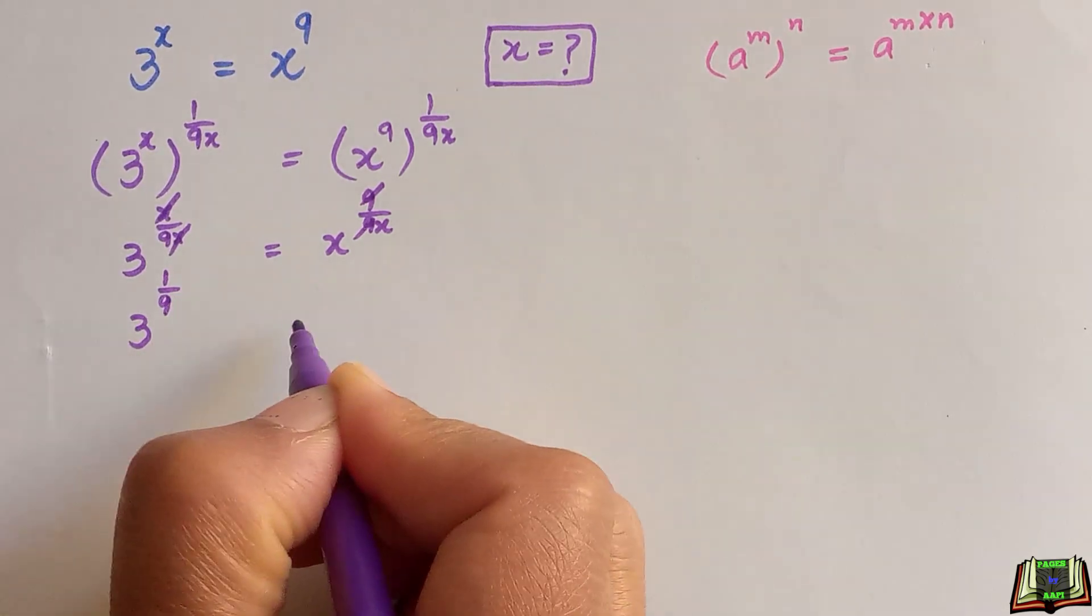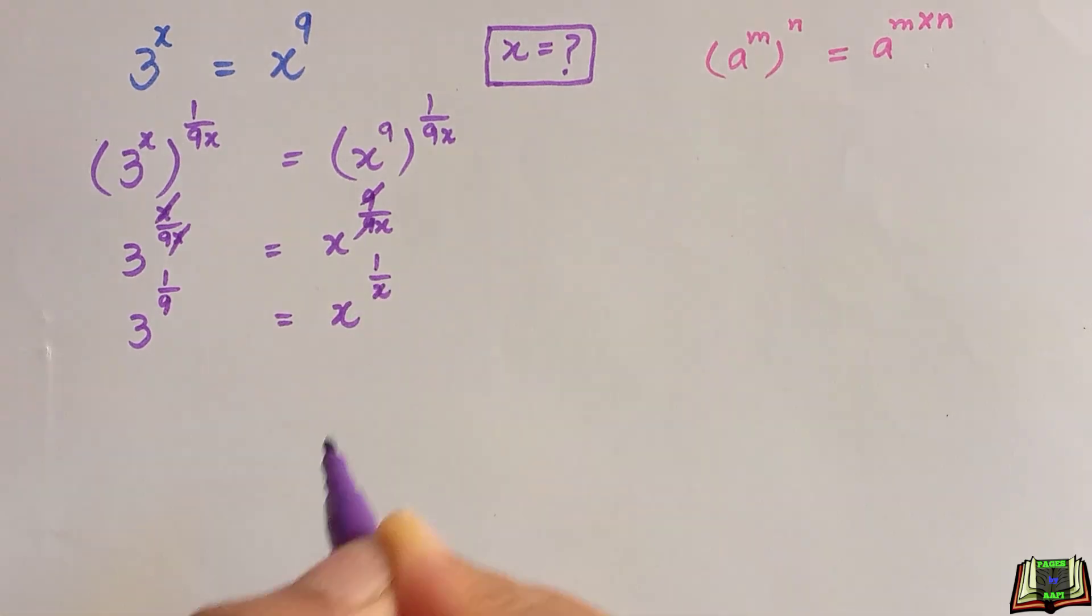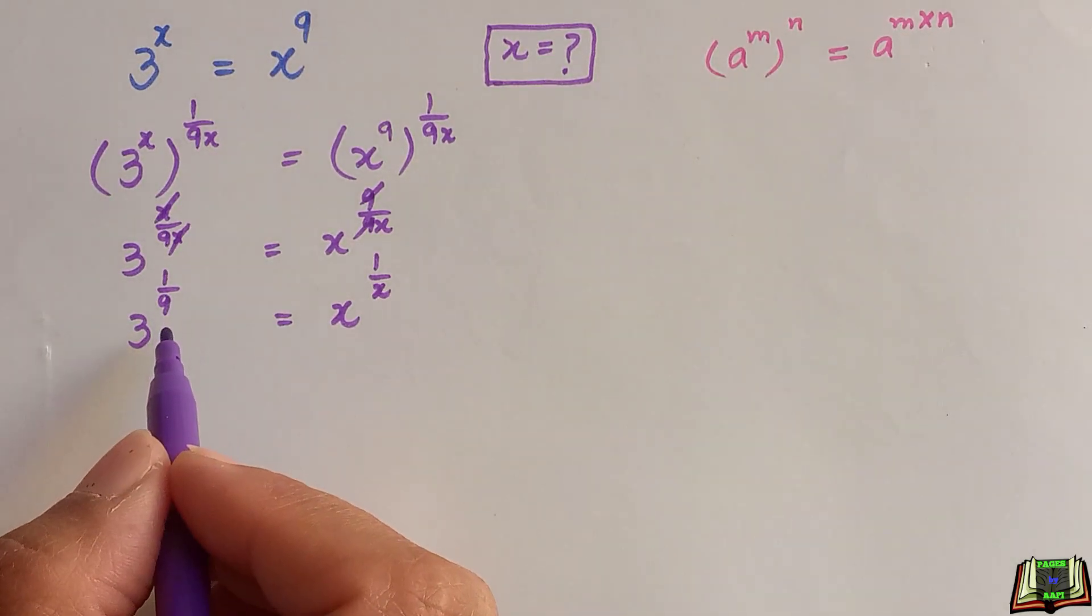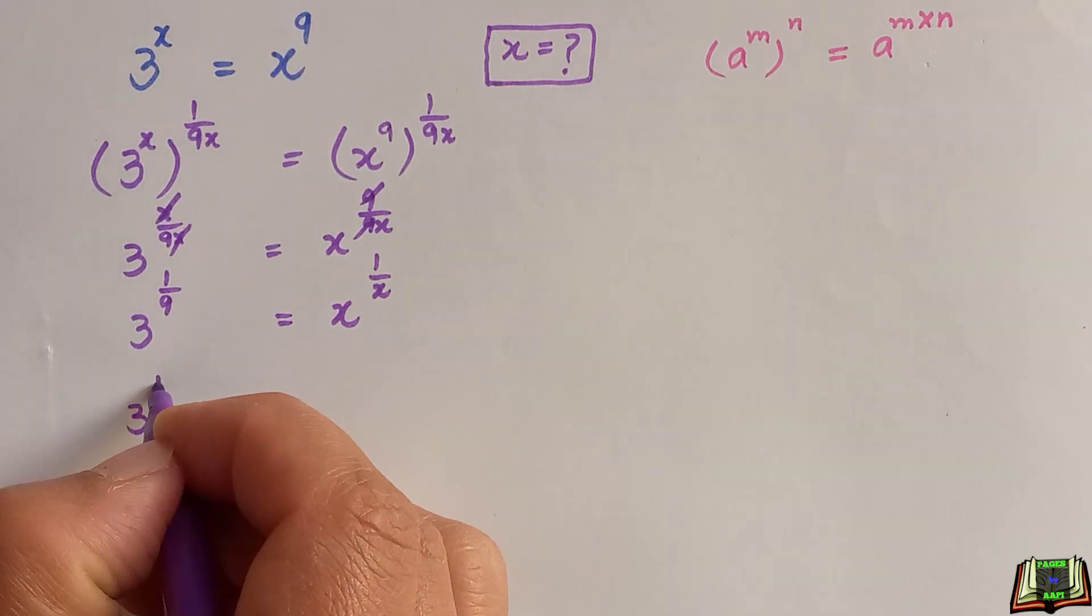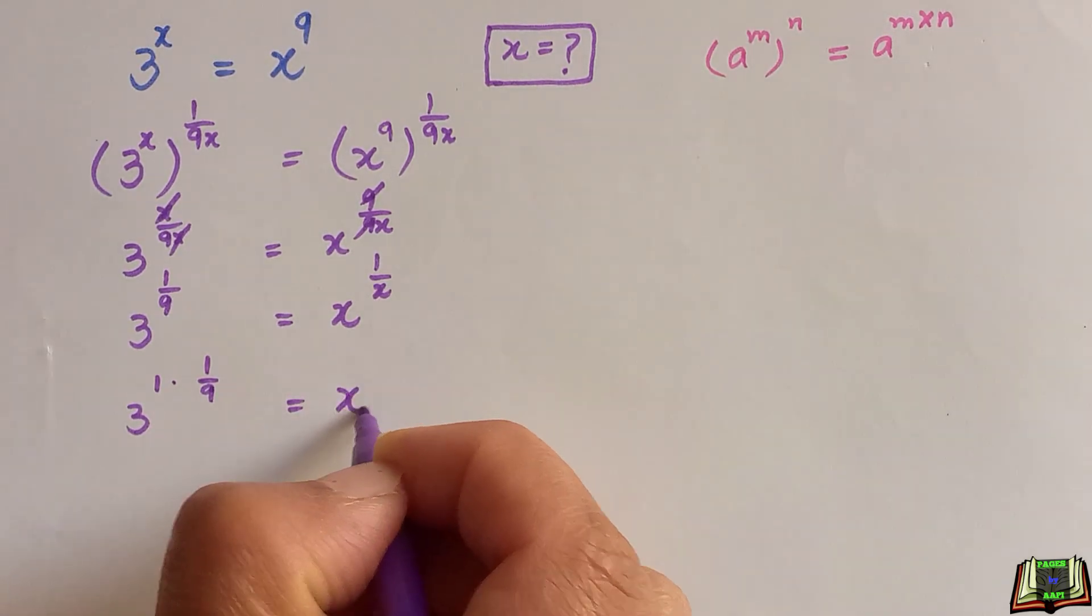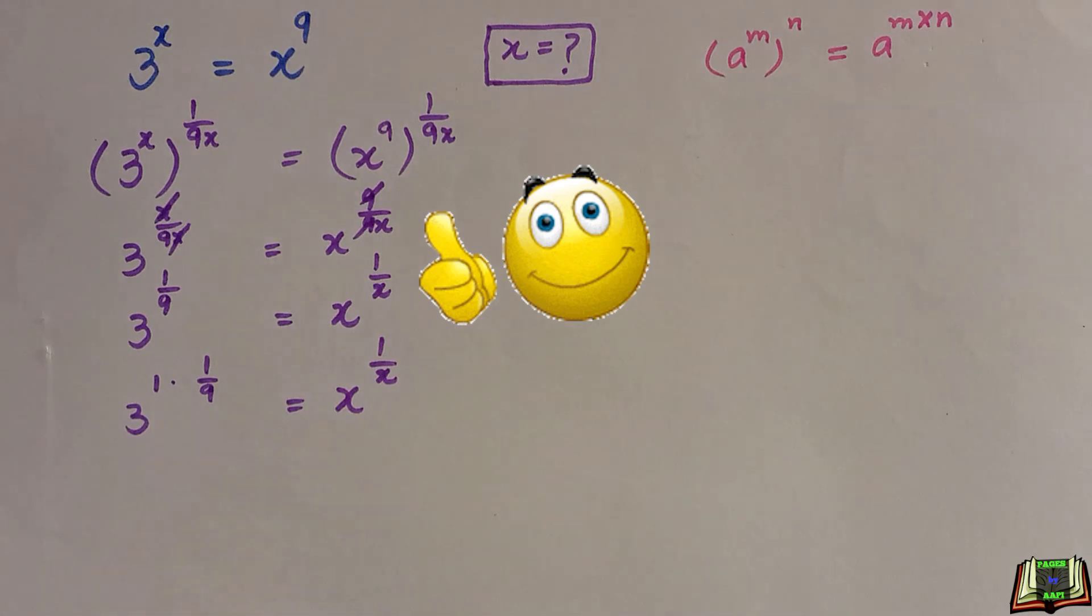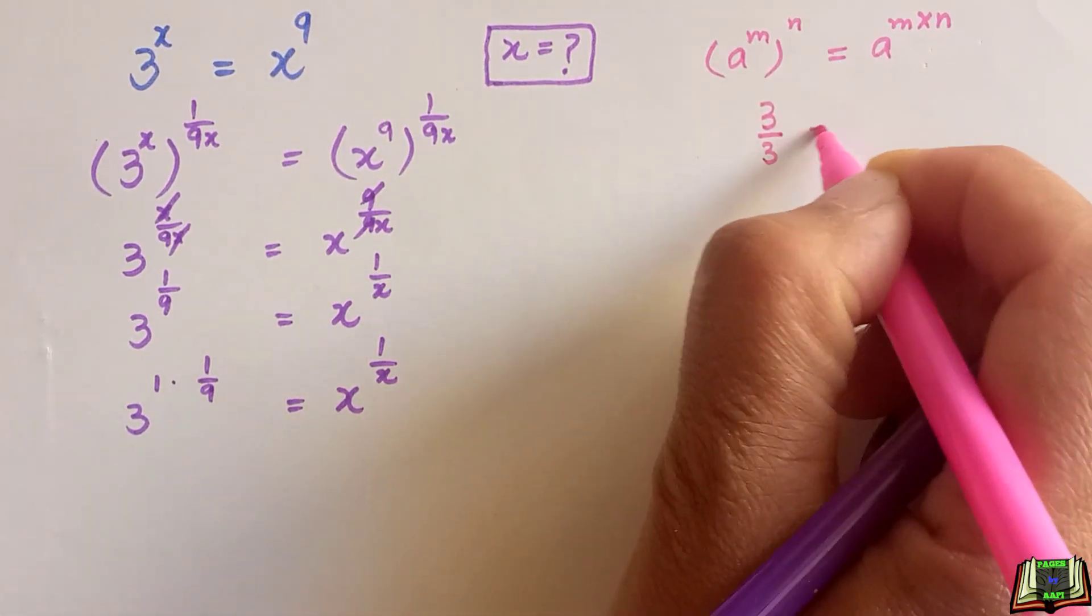In the next step, we are going to write 1 over 9 to its equivalent value. We can write it as 3 raised to power 1 times 1 over 9. And if we take this one as 3 by 3, so this is equal to 1.